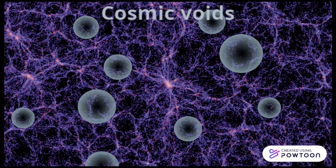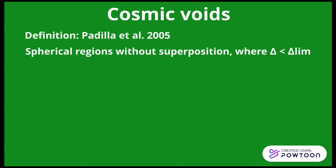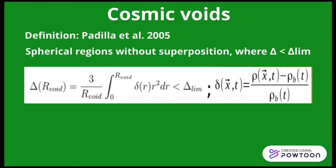These are the cosmic voids and the future virialized structures. The cosmic voids are the regions on large scale structures with the lowest value of density. The definition that we adopted is that of Padilla and collaborators, according to whom the voids are the spherical regions with no superposition in which the integrated density parameter delta is lower than a limit value.